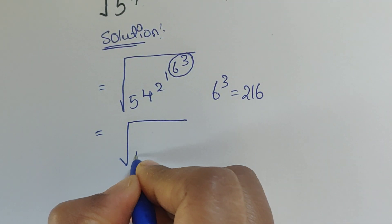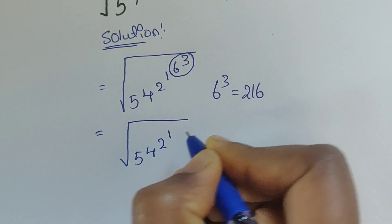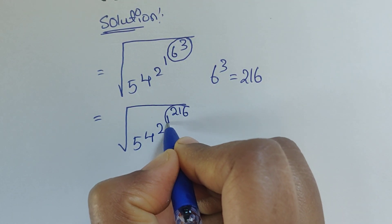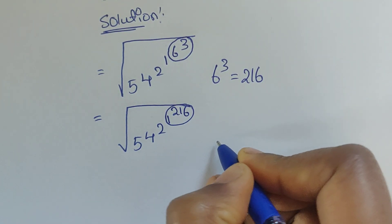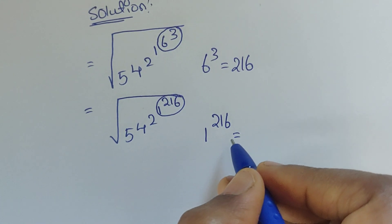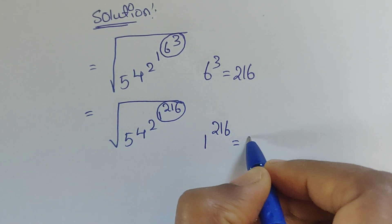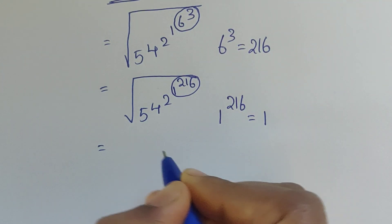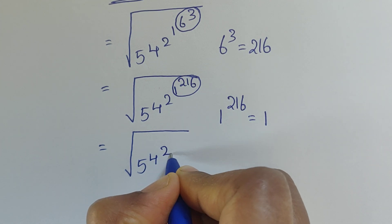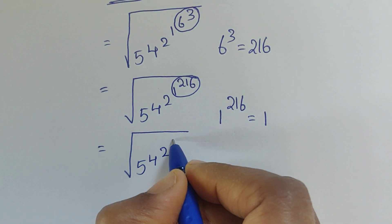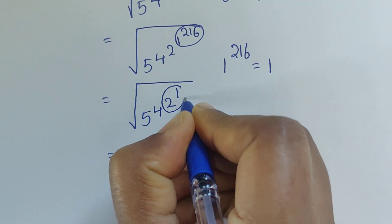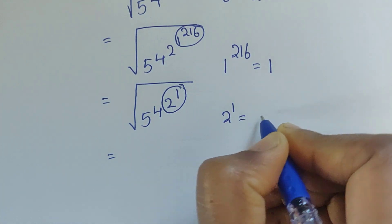We substitute 6³ with 216, so we now have the square root of 5 to the power of 4, times 4 to the power of 2, times 2 to the power of 1, times 1 to the power of 216. Now, 1 to the power of anything is always equal to 1, so 1 to the power of 216 equals 1.